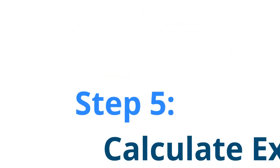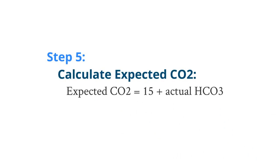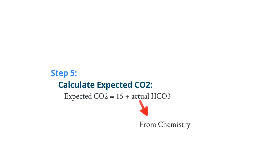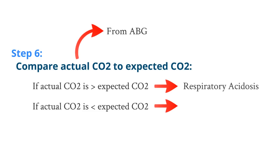Now let's move to step 5. In step 5, we calculate the expected CO2. The expected CO2 equals 15 plus the actual bicarbonate — that means the bicarbonate from the chemistry. When you have the expected CO2, you can move to step 6. In step 6, we compare the actual CO2 to the expected CO2. If the actual CO2 is greater than the expected CO2, then you have a respiratory acidosis. If the actual CO2 is less than the expected CO2, then you have a respiratory alkalosis.